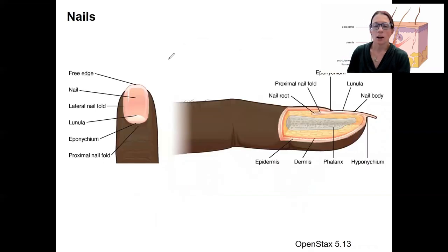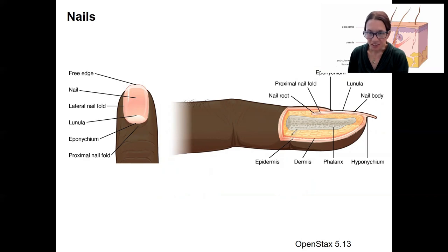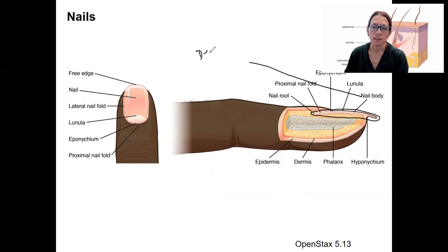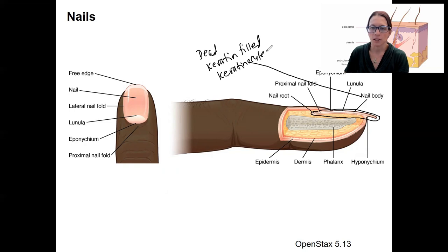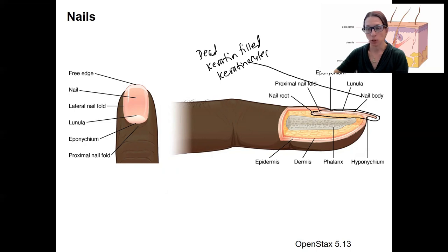Nails. Nails have various names for all their parts. Some of these are just skin underneath. The nail body is the bulk of the nail — what you think of as your nail — and that is composed of dead, keratin-filled epithelial cells. You can read more about hair growth and nail growth in your book if you'd like.